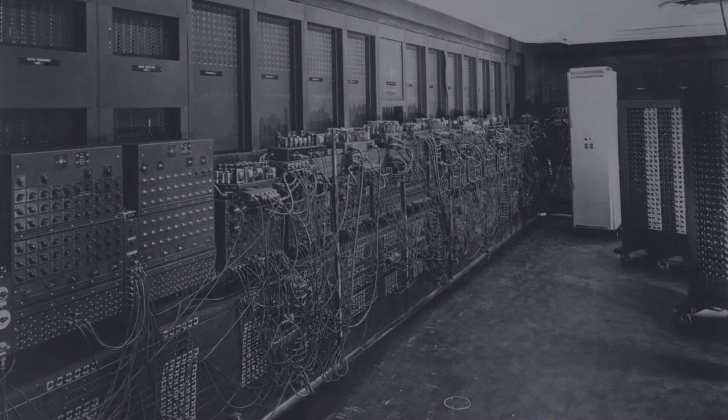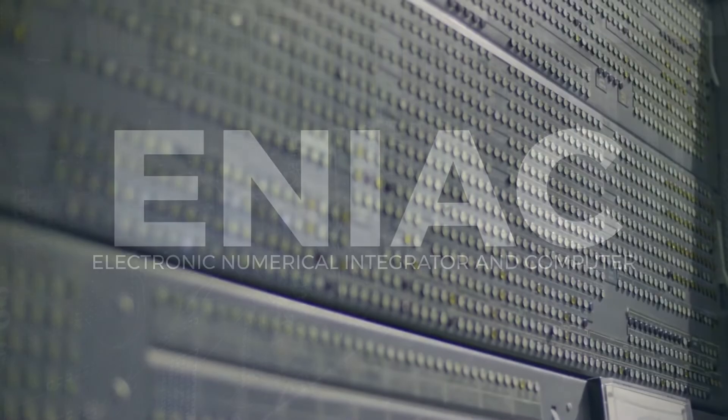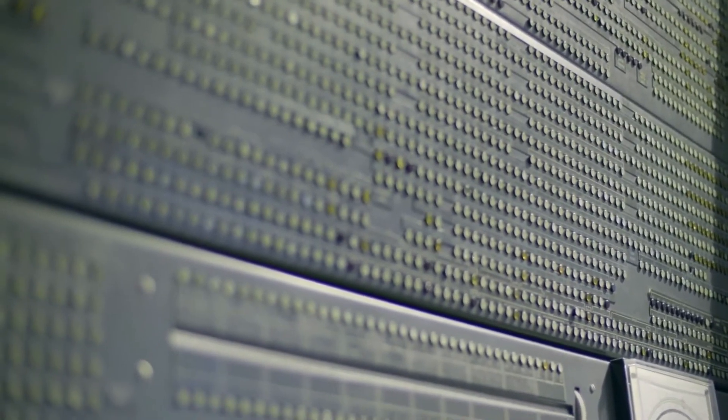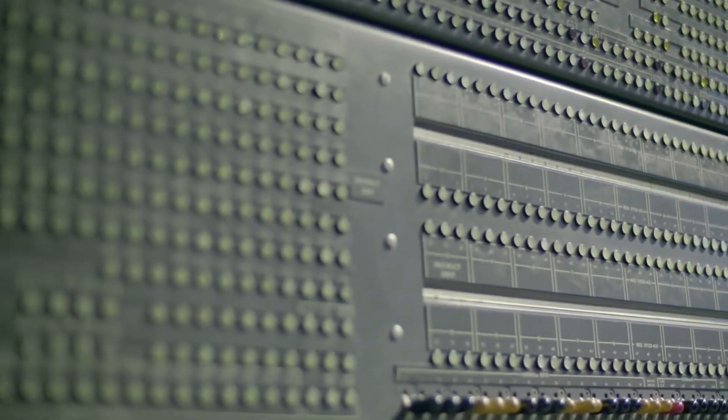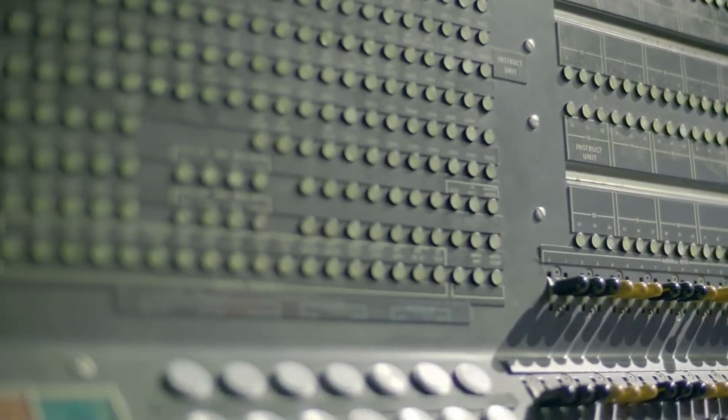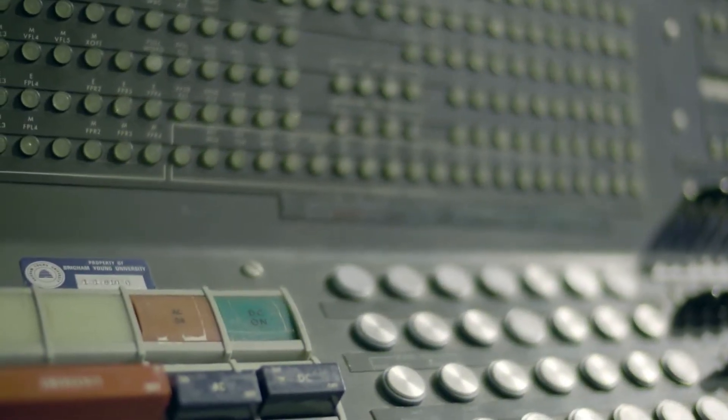ENIAC (Electronic Numerical Integrator and Computer), the first electronic programmable computer, is one example. It took up 140 square meters of space. However, the capabilities of this machine more than compensated for the enormous size. For example, ENIAC was able to perform complex calculations of the projectile trajectory in 30 seconds, whereas a human would take 20 hours.